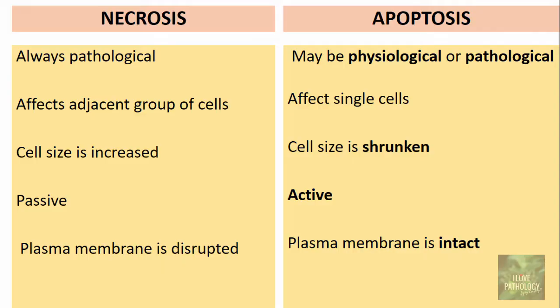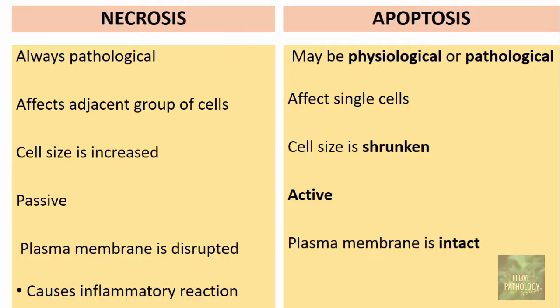Because the plasma membrane is disrupted in necrosis, the contents of the cells are leaked out and that elicits an intense inflammatory reaction. We see lots of inflammatory reaction around necrotic tissue, whereas in apoptosis, because the plasma membrane is intact and there is no leakage of the cytoplasm contents, there will be no inflammatory reaction.